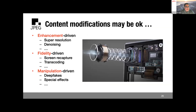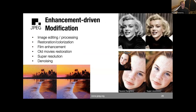Most examples so far focused on malicious cases, but there are also many creative and positive uses. One area is enhancement-driven modification, where AI techniques improve image quality. Examples include artificially colorized images, super-resolution images created from low-resolution originals using AI algorithms, and AI-based denoising. These techniques can also be applied to video.